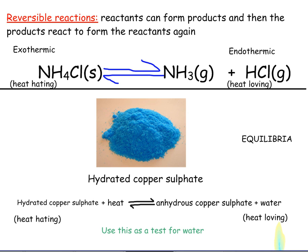So reversible reactions — for the foundations here, you've just got to recognise that this is a symbol for a reversible reaction, and that means it goes in both directions. It means that this ammonium chloride will break down to ammonia and hydrochloric acid, and then these two will join back together again and go back to ammonium chloride. So it keeps going backwards and forwards, which is why it's got an arrow this way and an arrow that way.